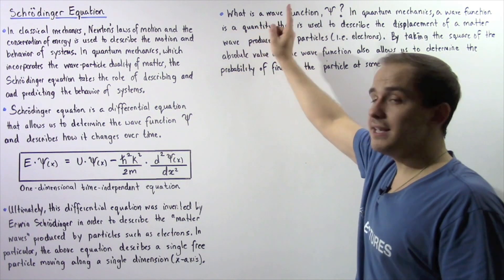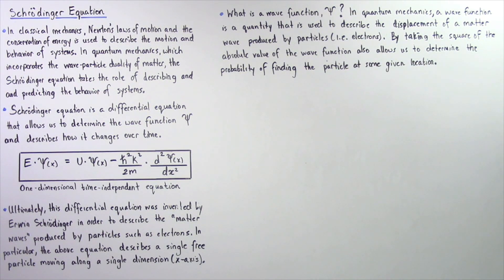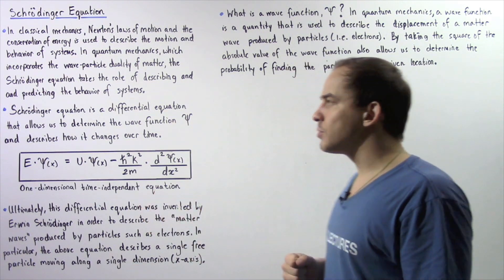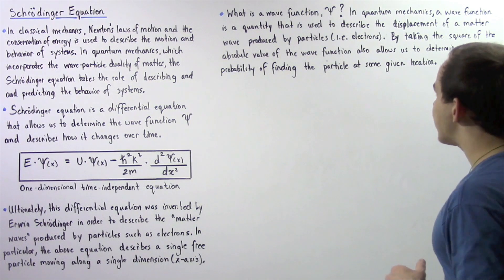And Schrödinger's equation itself basically allows us to determine something known as the wave function. But what exactly is the wave function? Now in quantum mechanics, we use the wave function, which is basically a quantity, and we use it to describe the displacement or amplitude of our matter wave that is produced by that particle, in our case, our electron.